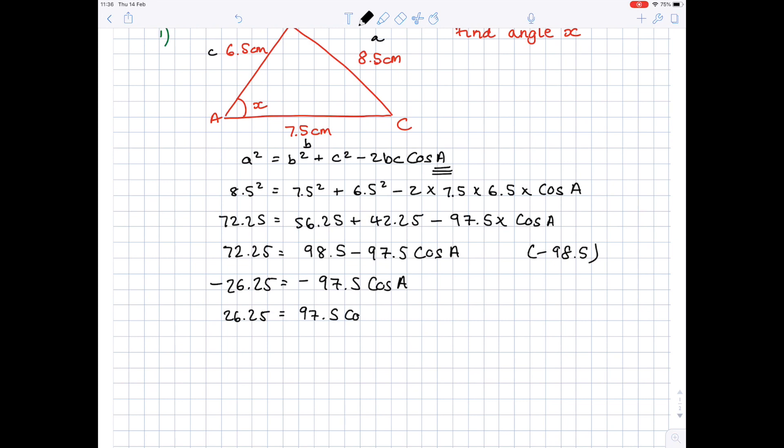In order to stop cos A being multiplied by 97.5, we want to divide both sides by 97.5. You'll get a value which is 0.269 blah blah blah equals cos A. We're finally ready to find out our answer. We need to do inverse cos. Press those numbers in your calculator, and you'll get an angle of A, which is 74.4 degrees to three significant figures.